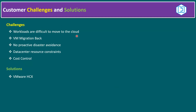Another challenge: let's say we already migrated the workload to any hyperscaler public cloud and later plan to migrate it back — that is a VM migration-back challenge. How we can migrate all our workloads from cloud to on-premises is also one challenge. The third point is no proactive disaster avoidance — if any disaster or outage occurs, how we can recover quickly is also a challenge.